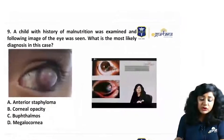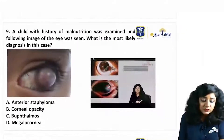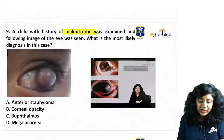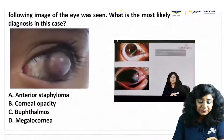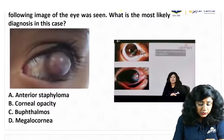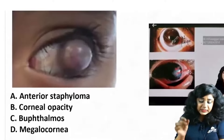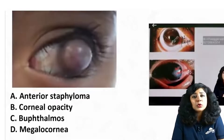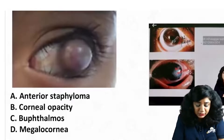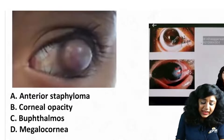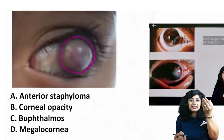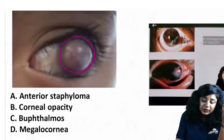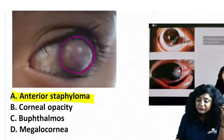A child with a history of malnutrition was examined and the following image has been given — what is the most likely diagnosis? This image is directly from our notes and is exactly the same image shown for anterior staphyloma. You can see there is a protrusion of the outer tunic of the eyeball — anteriorly. So this is what we call anterior staphyloma.